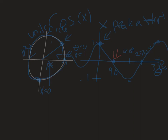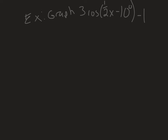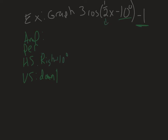Let's go through a cosine example to show how they're very similar yet a little different. I'll make the same list: amplitude, period, horizontal shift, vertical shift. Starting with the vertical shift: it's negative 1, so it goes down 1. The horizontal shift is negative, so it moves right 10 degrees. The period: 360 divided by one-half equals 720 degrees, so the period is stretched out to 720 degrees. The amplitude is 3.